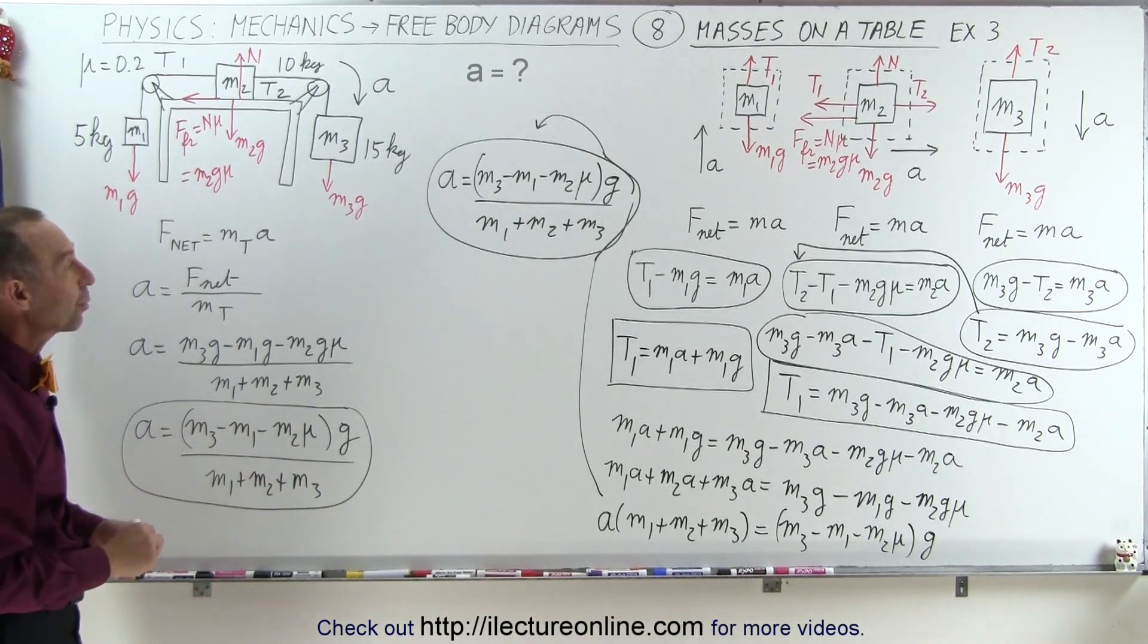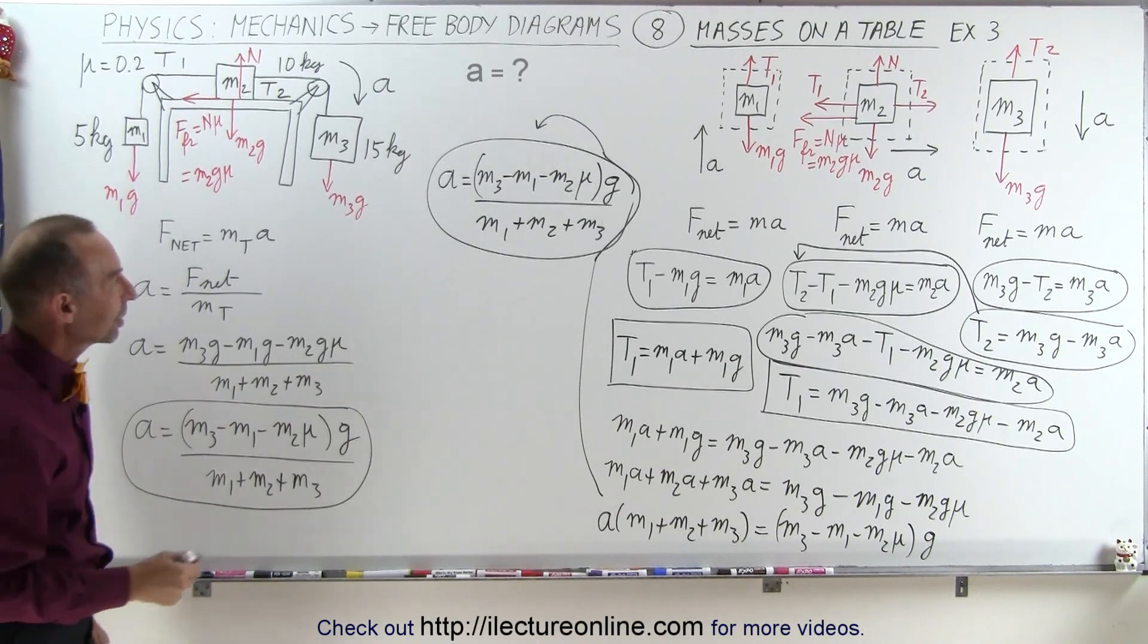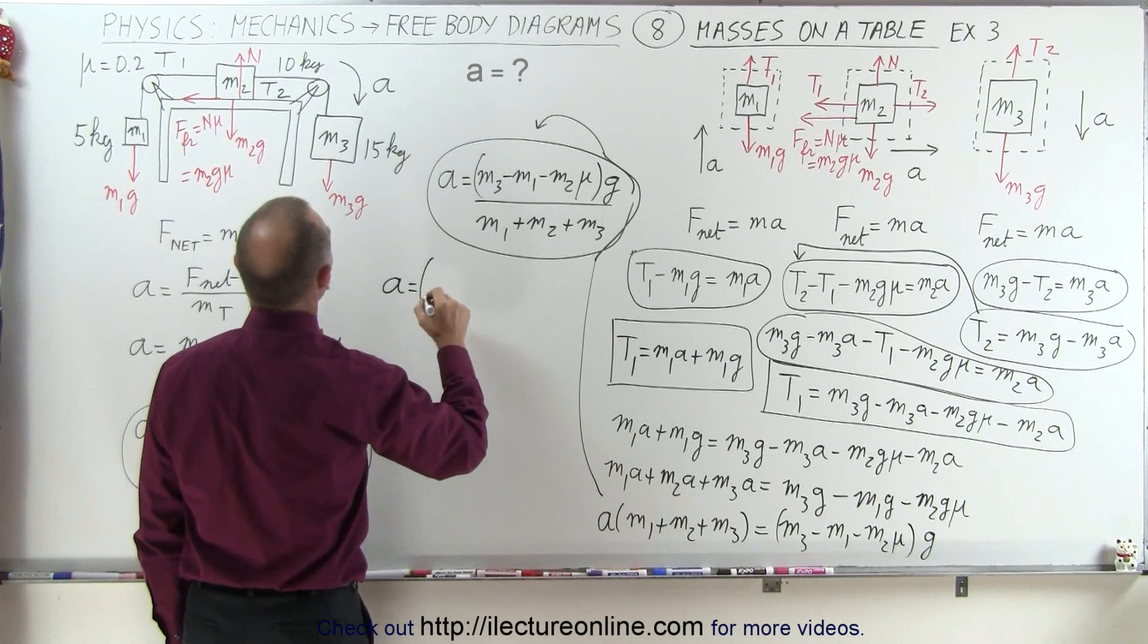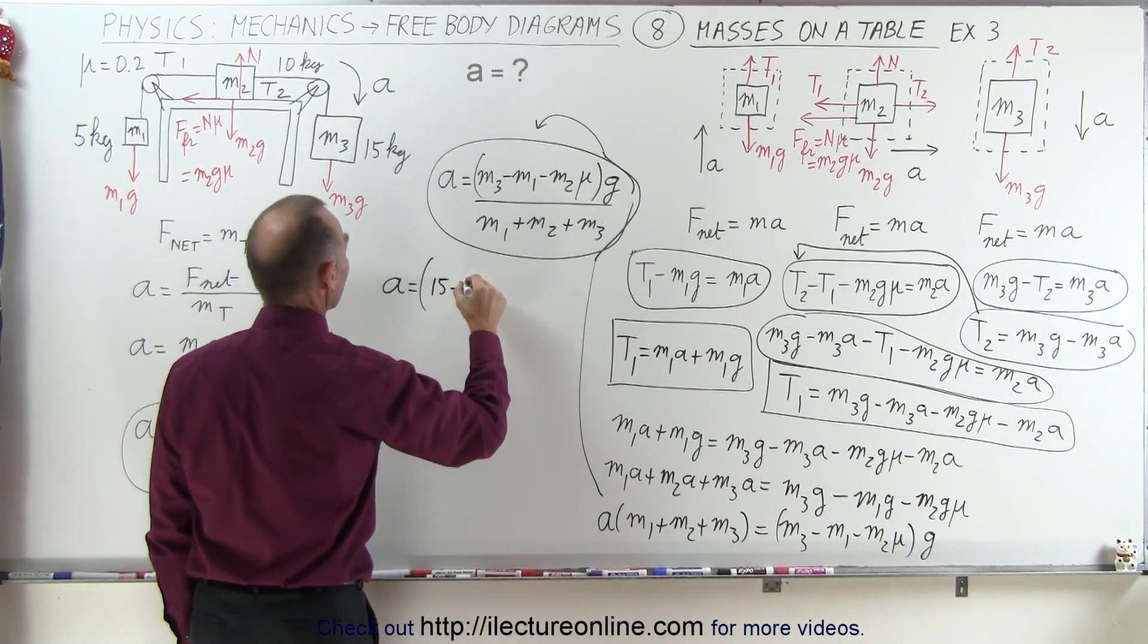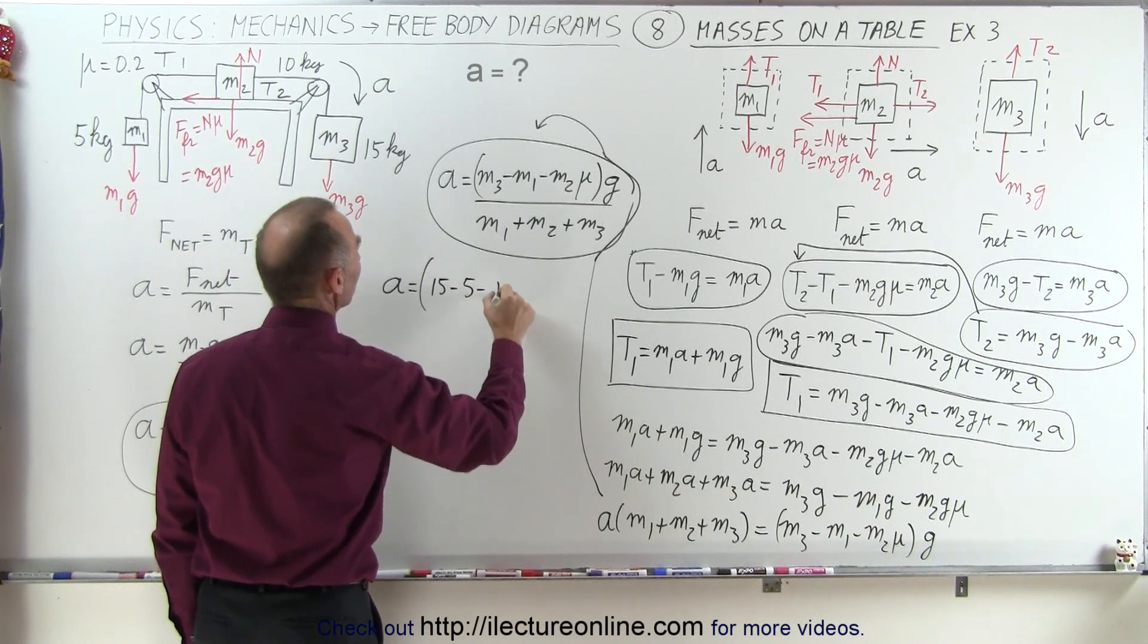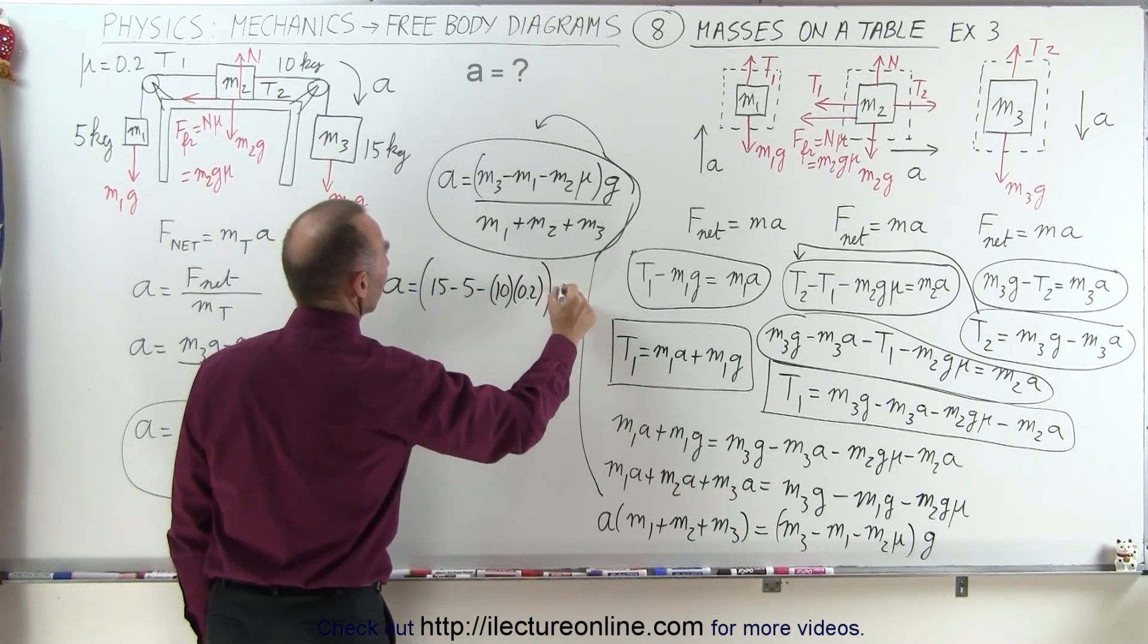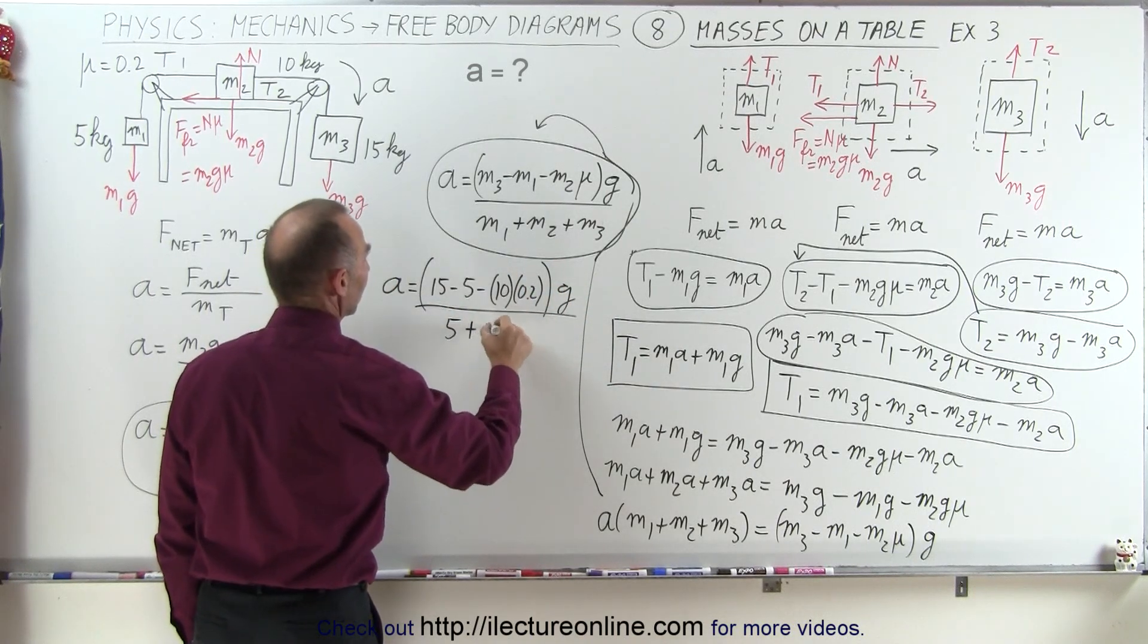So we got the exact same equation. So now when we want to plug in the numbers to get the real value for the acceleration, we see that acceleration is equal to M3, which is 15, minus M1, which is 5, minus M2, which is 10 times 0.2, all times g, divided by the sum of the masses, 5 plus 10 plus 15.